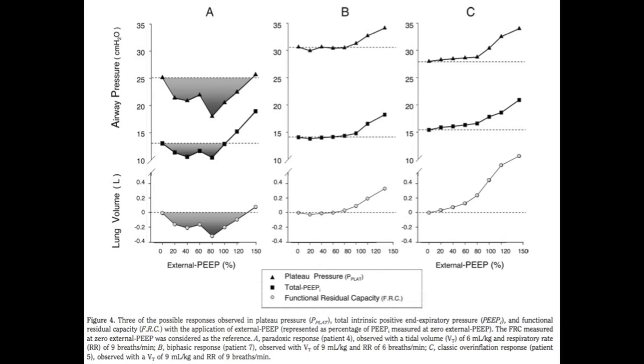From this, there's a thought that adding PEEP, in the very least, likely doesn't result in a great increase of your plateau pressures until you get to about 80% to 100% of your intrinsic PEEP level. And there's a potential that by adding PEEP to a patient who already has intrinsic PEEP present, you may actually decrease their plateau pressures and auto-PEEP levels.